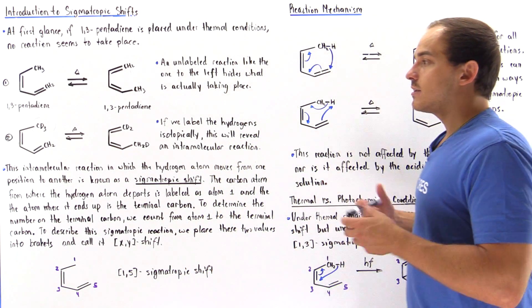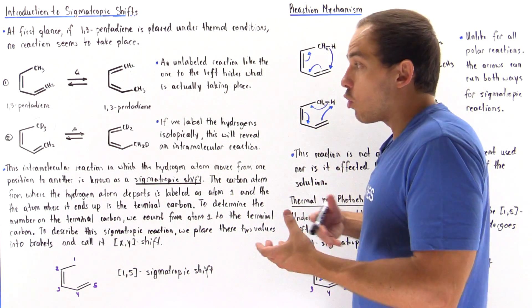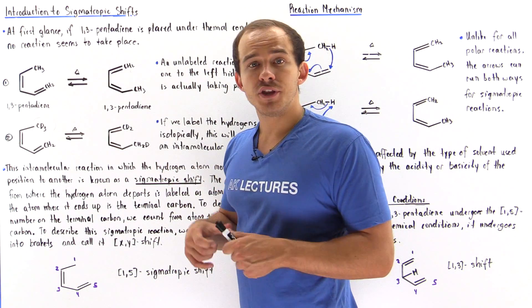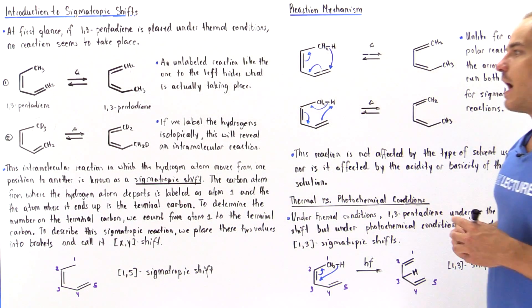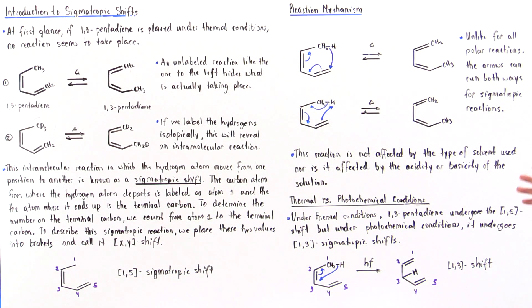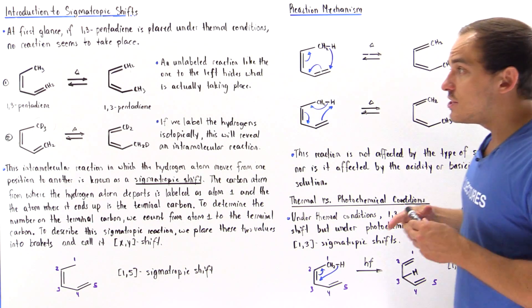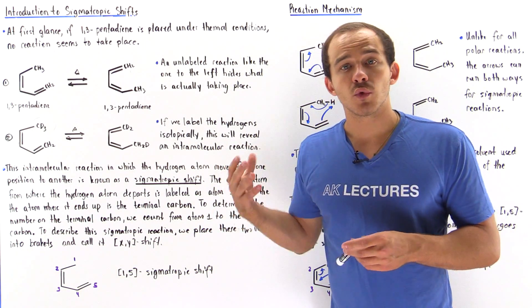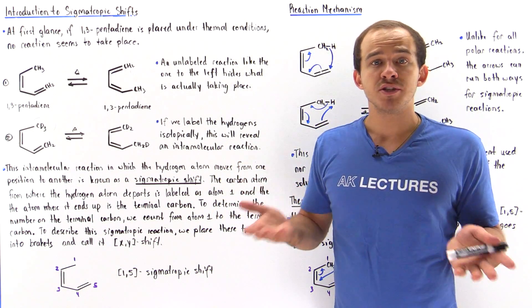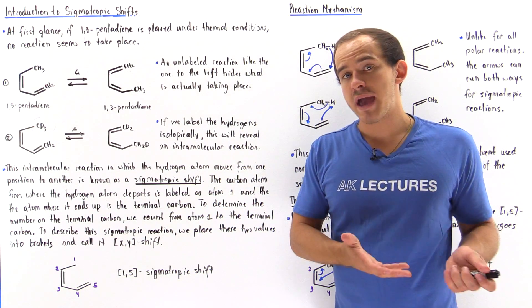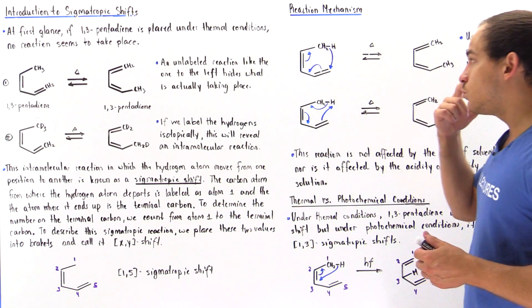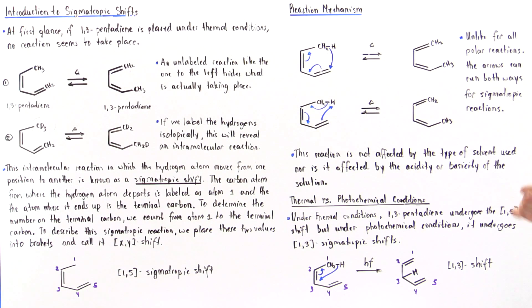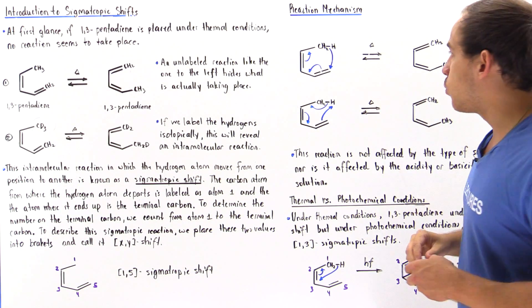Now what exactly is the arrow formalism or the reaction mechanism for this particular reaction? So let's take a look at the following section. Now we have to point out the fact that this is not a polar reaction. It's not a reaction between a Lewis acid, Lewis base.